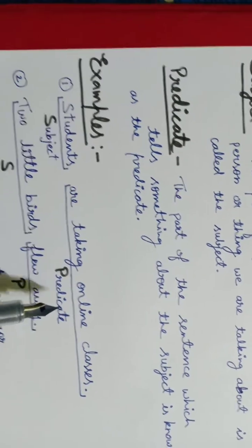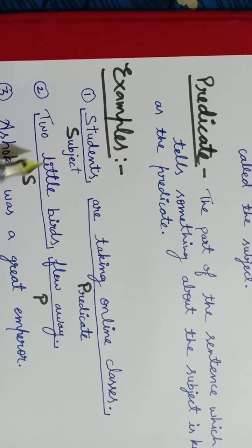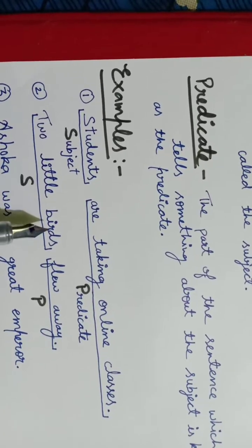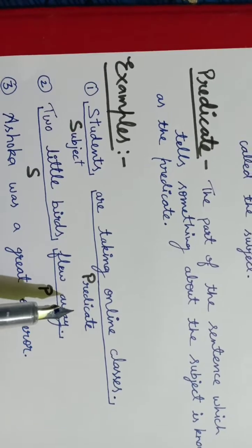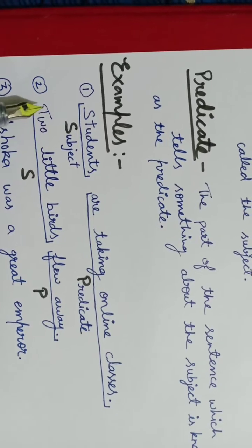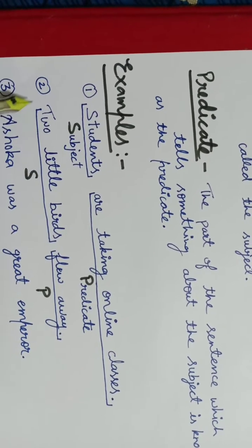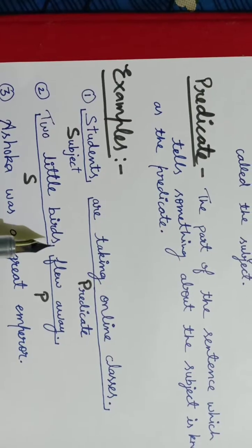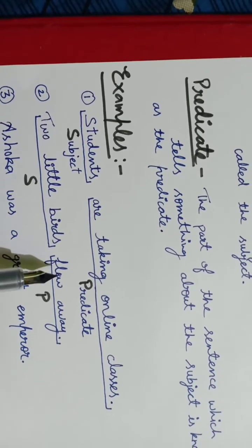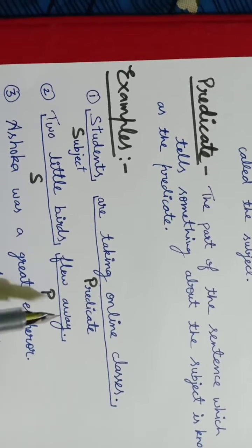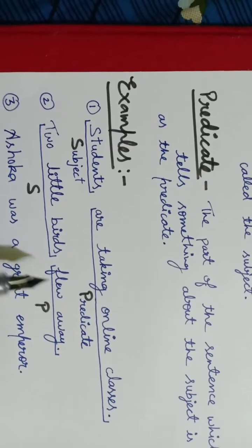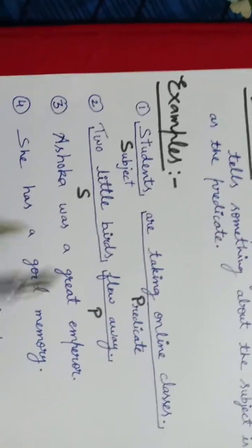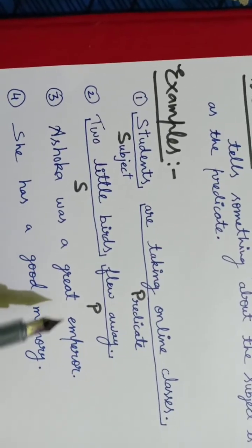One another example: Two little birds flew away. Subject hua hai two little birds. Kis ke baare mein baat ho rahi thi? Two little birds ke baare mein. Flew away, yeh humara ho gaya predicate. Same, next example dekhte hai: Ashoka was a great emperor. Is sentence mein hum kis ke baare mein baat kar rahe hain?